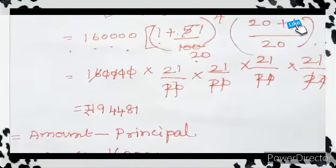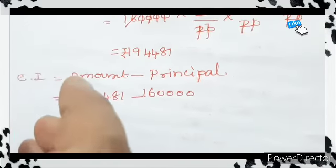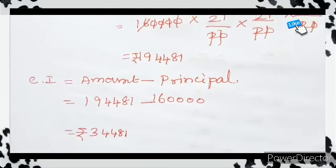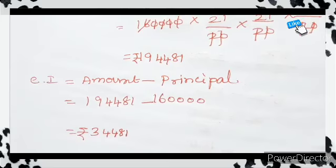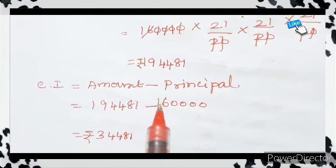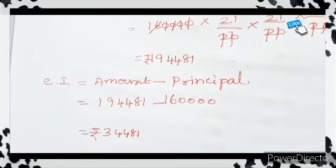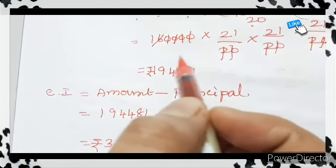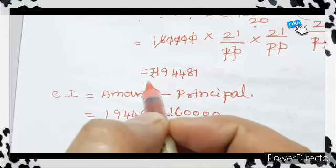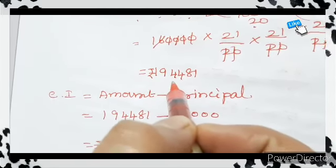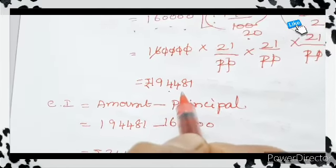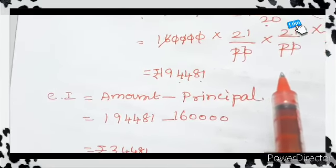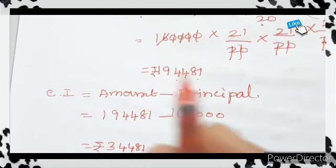While doing the calculations, you have to do it carefully, otherwise the problem will not come. The calculation must be very, very carefully done. The answer is 194,481. You have to do it carefully.